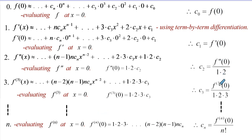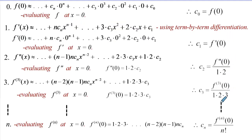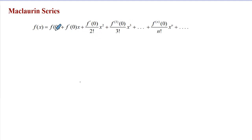We've now got the complete sequence of coefficients in the power series expansion. We can proceed and write the power series expansion using these coefficients: c_0 corresponds to x^0, c_1 to x^1, and c_n to x^n, continuing as a series. This power series is named the Maclaurin series.